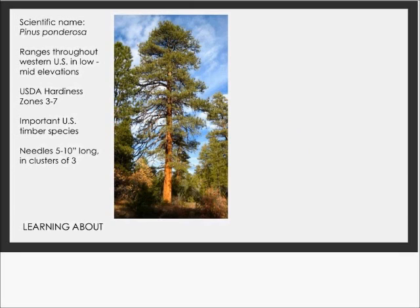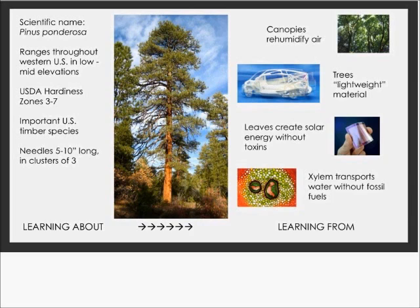Another way to think about biomimicry is how it changes the way we think and learn about the natural world. Traditionally, we convey information about organisms like their scientific name, geographic range, and predominant economic use — typical natural history material. Biomimicry offers a different way of thinking about the same organisms. It focuses not on what we can learn about organisms, but what we can learn from organisms. That's the key change.